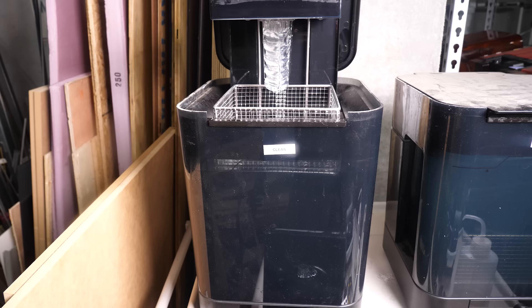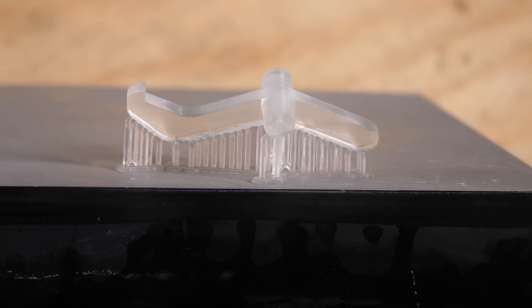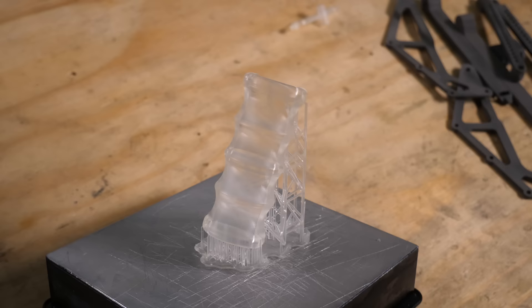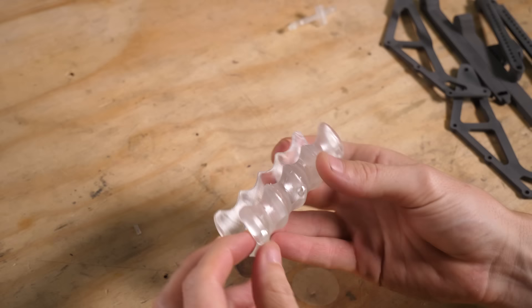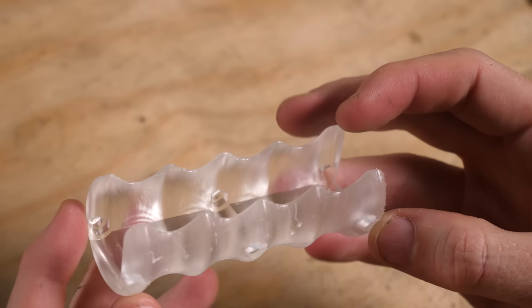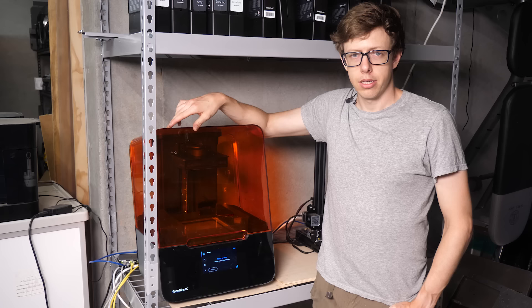The parts come out sticky, so you wash them off in a bath of basically rubbing alcohol. These weird structures that the parts are on are automatically generated supports. This is actually an algorithm that I spent a lot of time on. They're super optimized, so they just break off and you have a nice part. If I could only have one tool in the shop, this machine would probably be it.